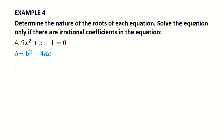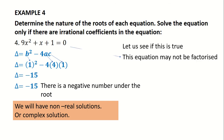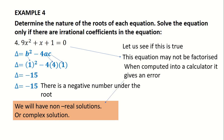What about this one? Substituting gives us delta equal to negative 15, meaning that underneath the square root of the quadratic formula we have a negative number. This indicates an unreal solution — what we refer to as a complex solution. If we try to substitute into the quadratic formula and put it into a calculator, we simply get an error, meaning there is no real solution, or the solution is complex.